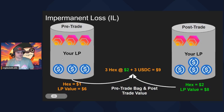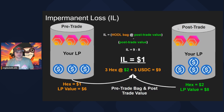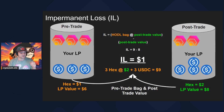The value we would have had if we held: three HEX tokens at the post-trade value of $2 equals $6, plus the three USDC tokens equals $9 total if we never put these tokens into liquidity. But because we provided liquidity, we lost the token going up in value — HEX — and our final value after the trade is $8. So our impermanent loss is $1, because if we had held we would have had $9, but providing liquidity left us with $8.